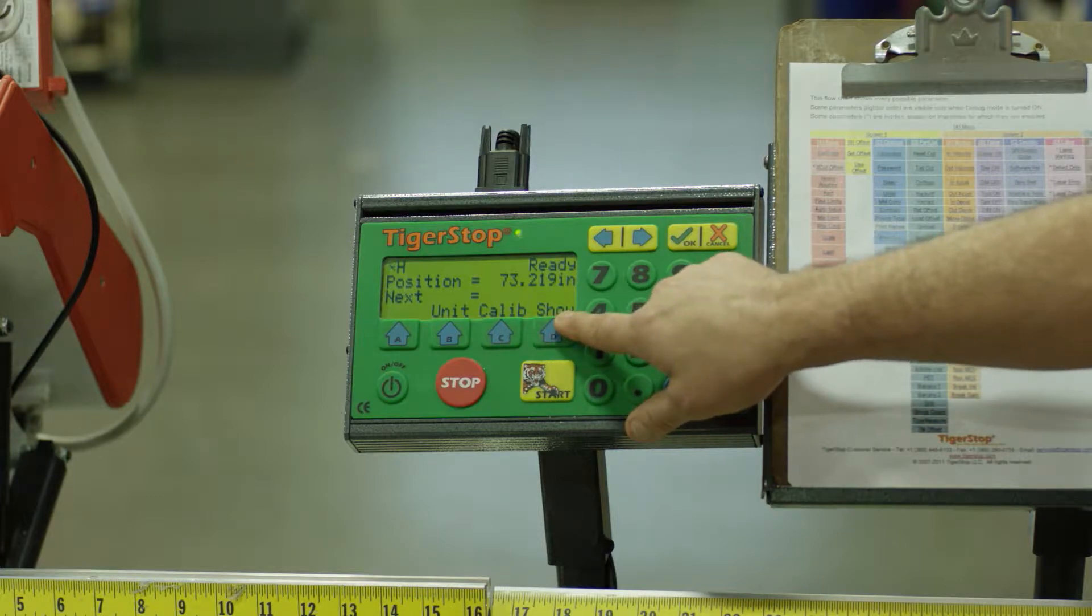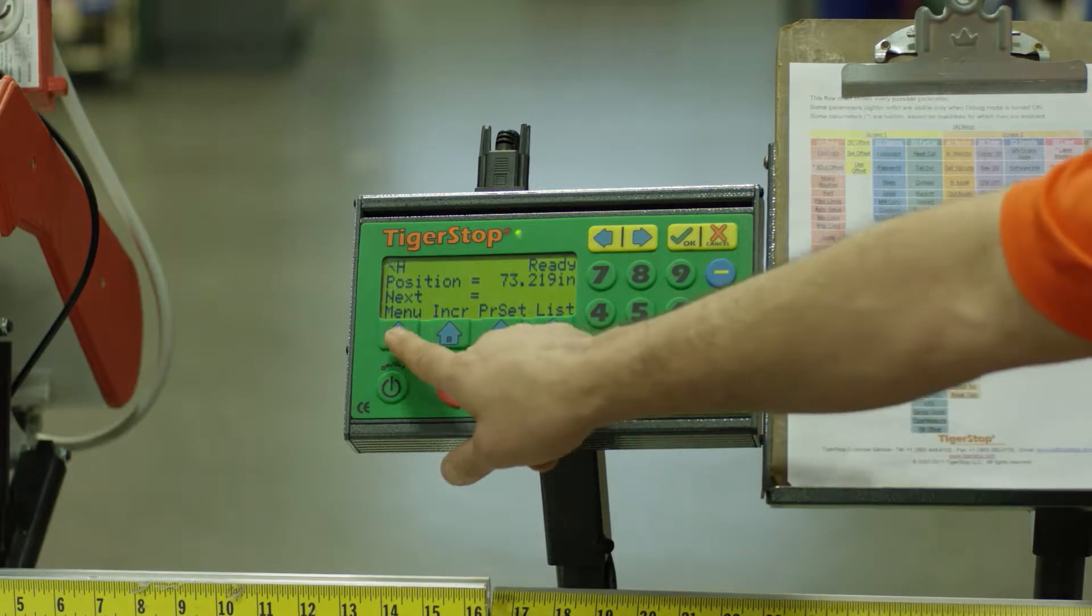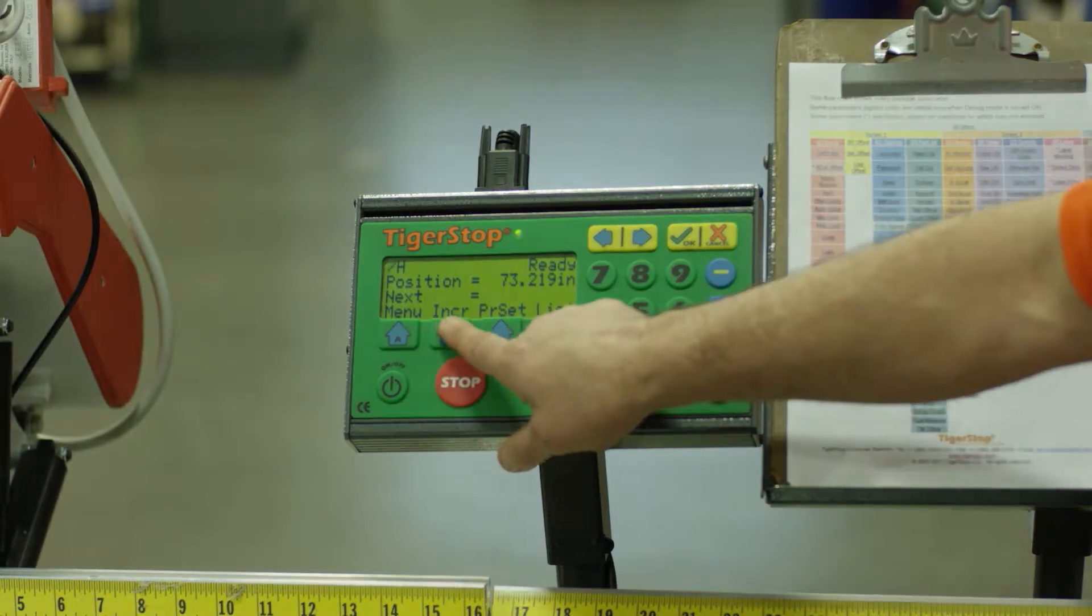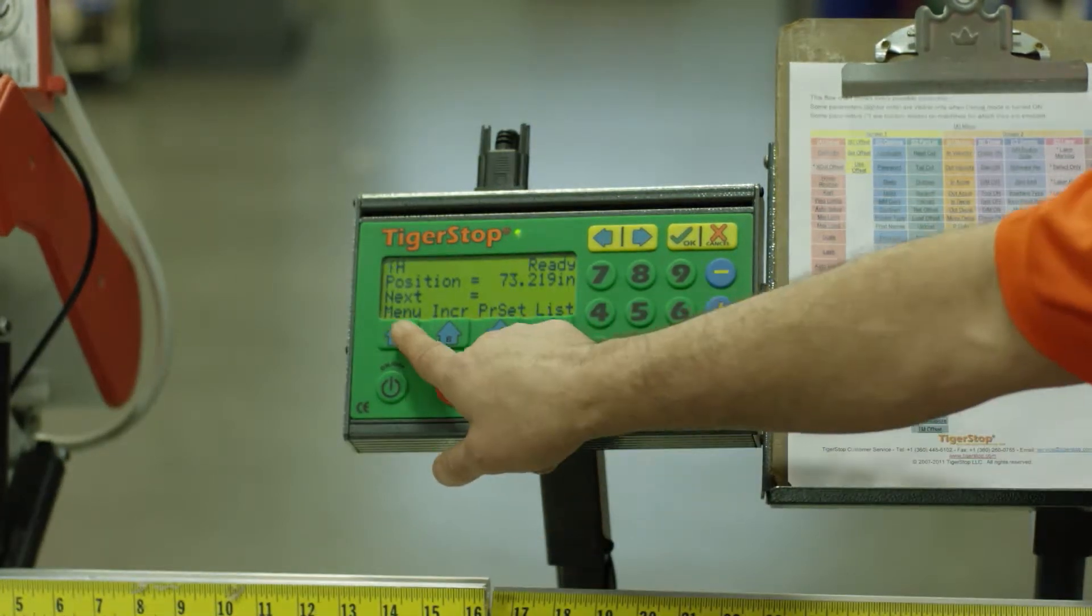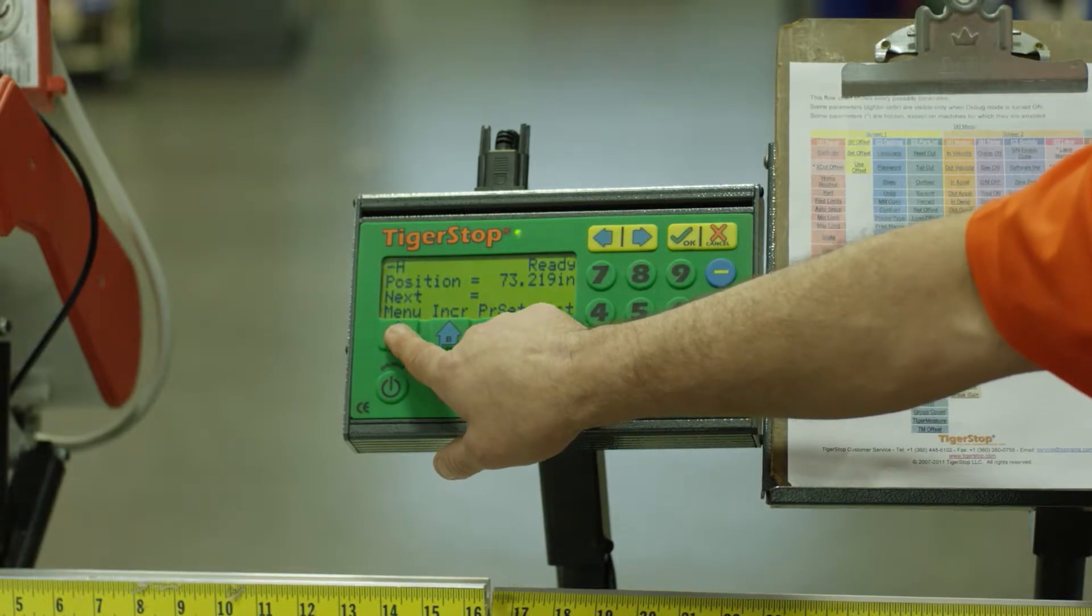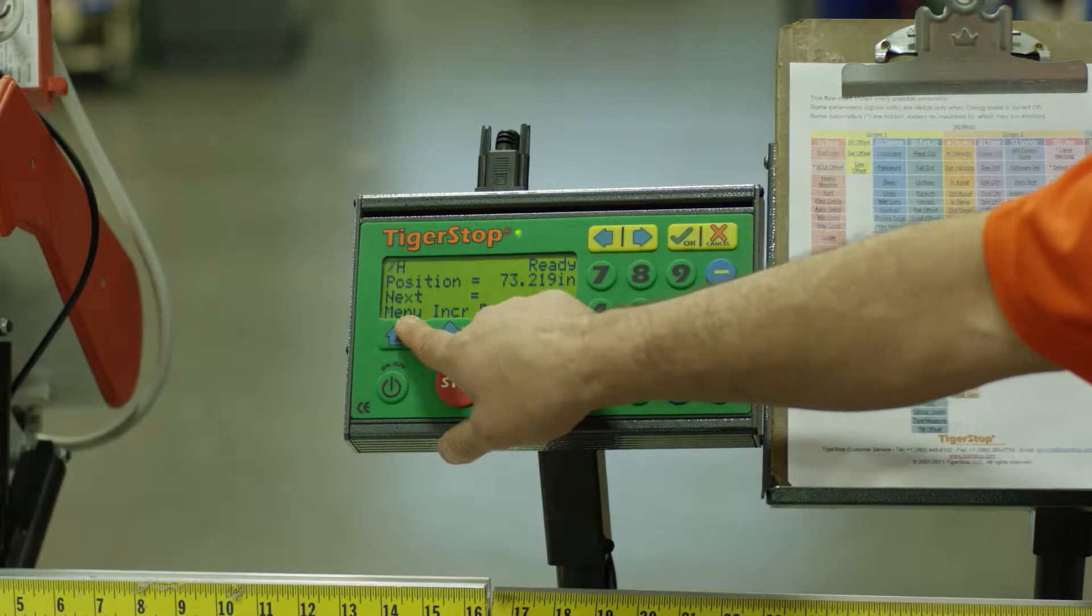To get into the menu flow or screens, you press the show button. At this point, you're going to see menu, increment, preset or list. We're going to focus on menu. Press A, the button corresponding to menu.